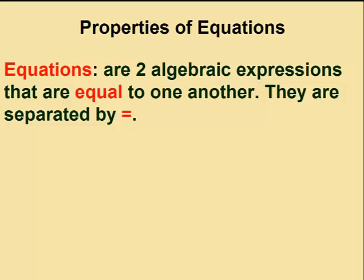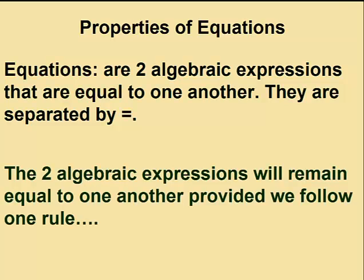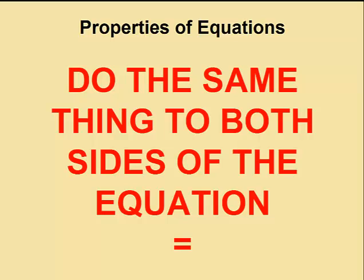To solve an equation, the two algebraic expressions must remain equal to each other at all times. And to do this, we need to follow one very simple rule. You need to do the same thing to both sides of the equation. With this simple rule, you can never do anything wrong.